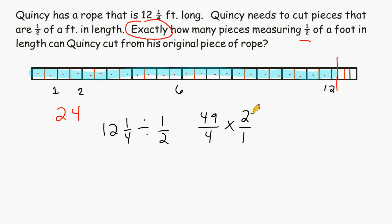Next we can cancel out this two and this four and change those numbers to one-half. And then we can multiply forty-nine times one, which is forty-nine, and divide that by two.